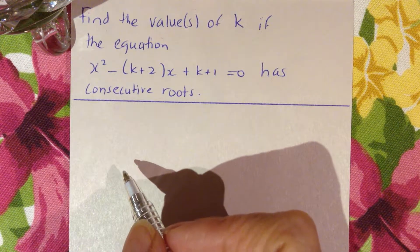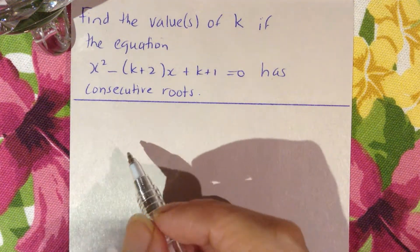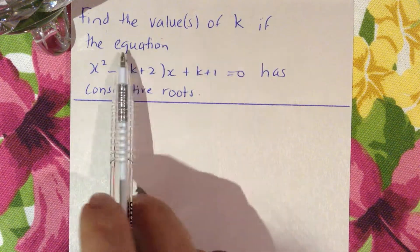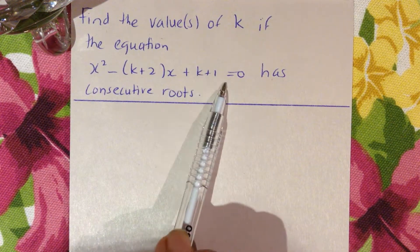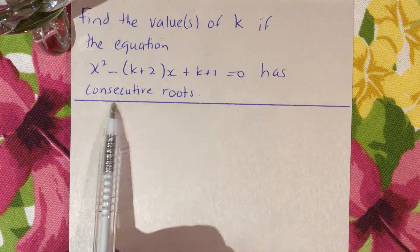Question 10C in 12.6 asks, find the values of k if the equation x² - (k+2)x + k+1 = 0 has consecutive roots.